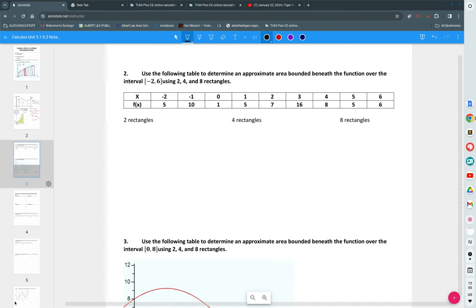The second thing you're going to be doing is instead of being given a rule for a function, you'll be given a table. So, we would like to find the area using two rectangles given this table. What is going to be the width of each rectangle if we have two rectangles? Four. Four. Why four?